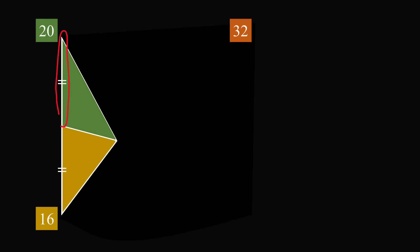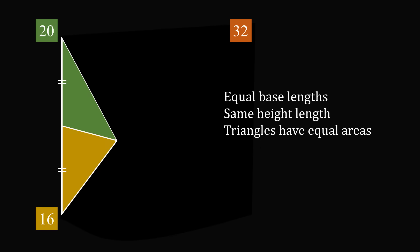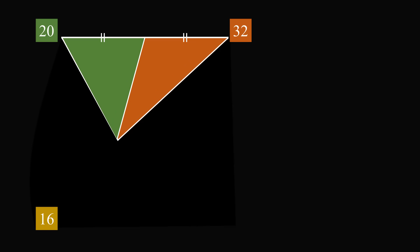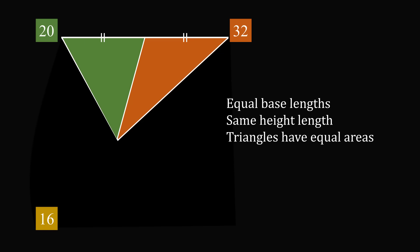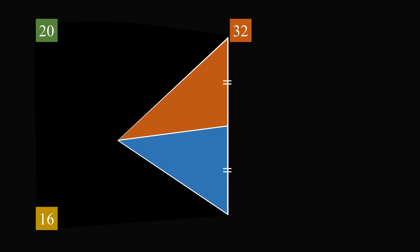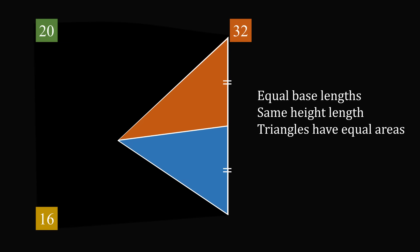Let's do the same thing for all sides of the square. On the left side, the two triangles are divided at the midpoint, so they have equal base lengths and equal heights — let's denote these areas by B. On the upper side, the two triangles similarly have equal base and height lengths — let's denote these areas by C. Finally, on the right side, the two triangles again have equal areas — let's denote these by D.